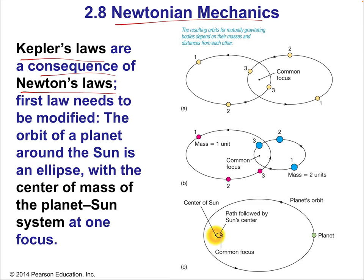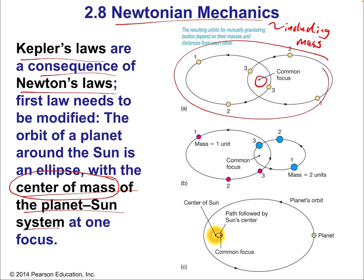The actual focus of the ellipse is the shared focus, which is the center of mass — the balance point. What Newton's laws do that Kepler's laws don't is include mass. Newtonian mechanics are all about including mass in the consideration. Newton's genius was taking these ideas and including mass — inertia measured in kilograms. This is the necessary modification to Kepler's first law: it's not one ellipse but two ellipses with a shared focus. Furthermore, Newtonian mechanics tells us the force keeping planets in orbit around the sun is the gravitational force.